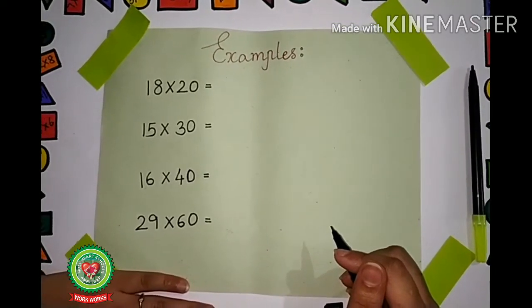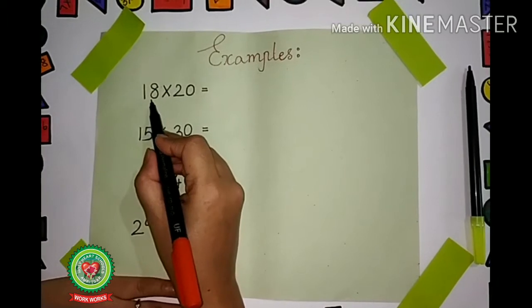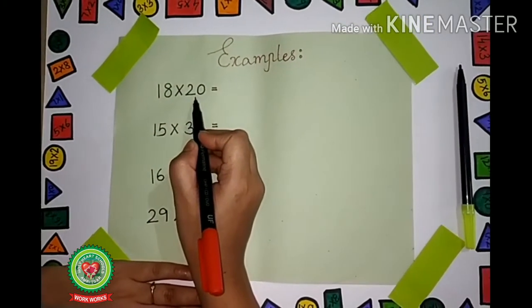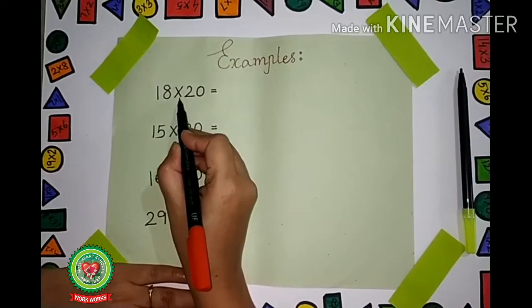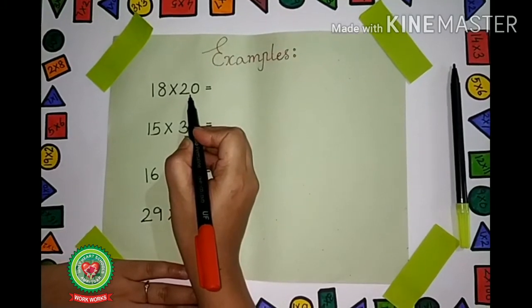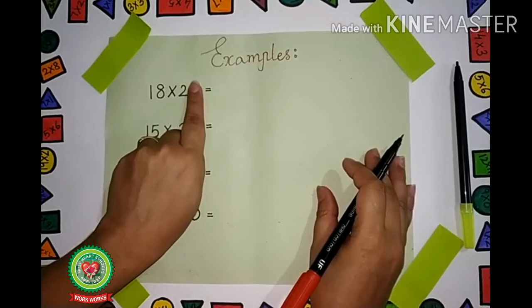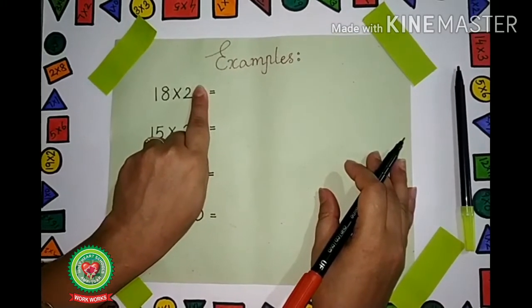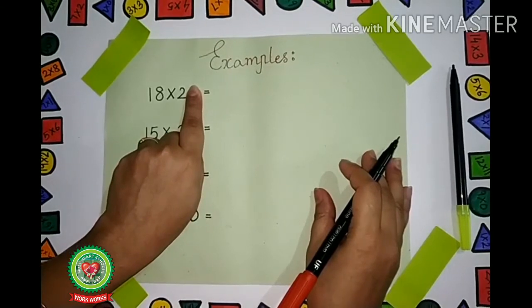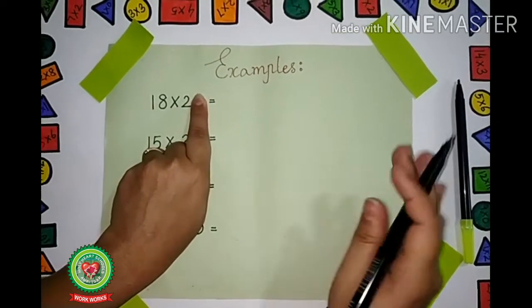Can you see the first question? What is the first question? 18 × 20. Remember, our very first step is to hide the given zero. Hide the zero with your finger. Now, after hiding the zero, what can you see? 18 × 2.